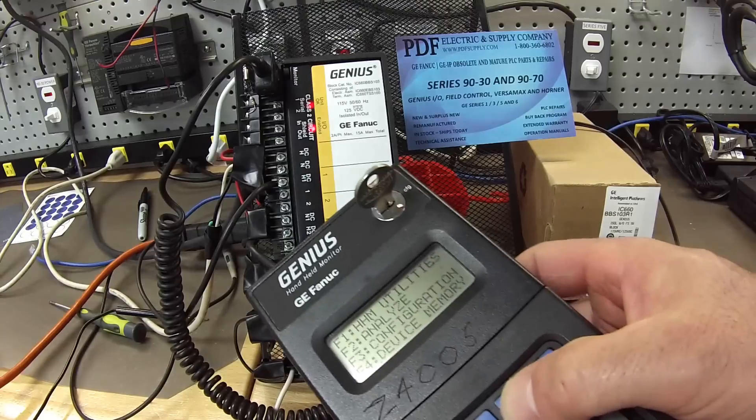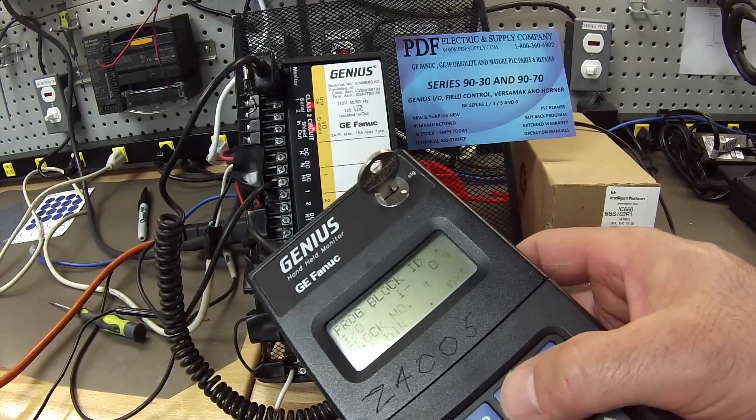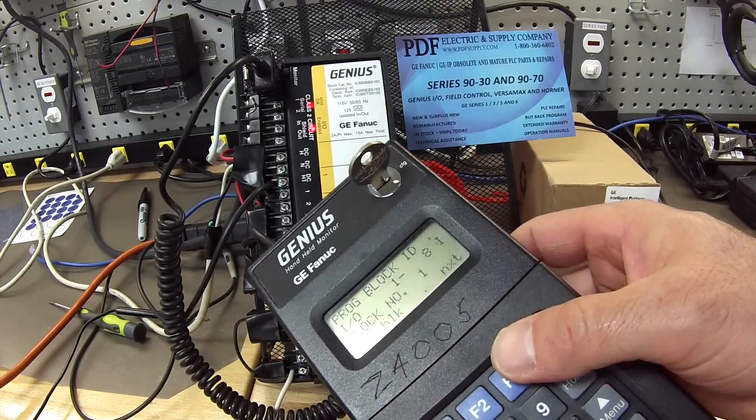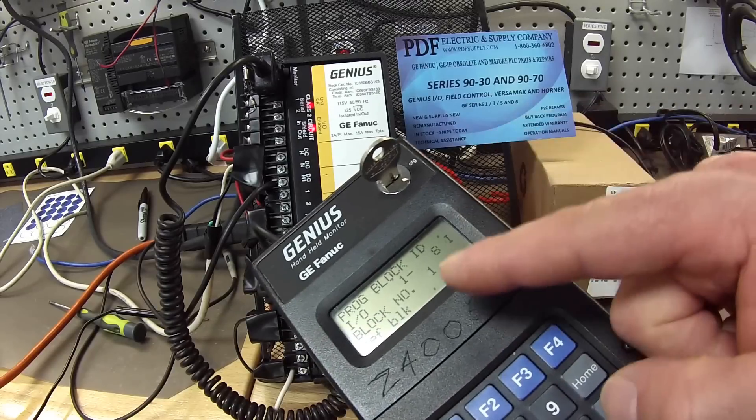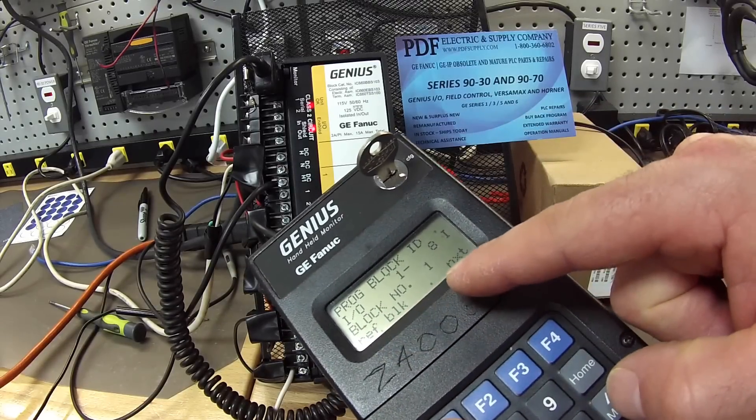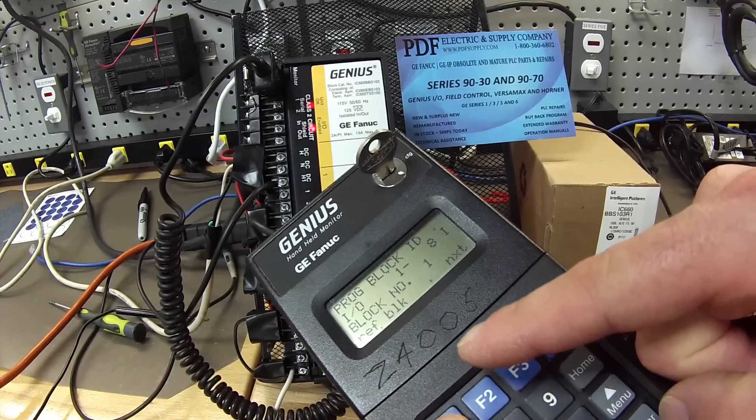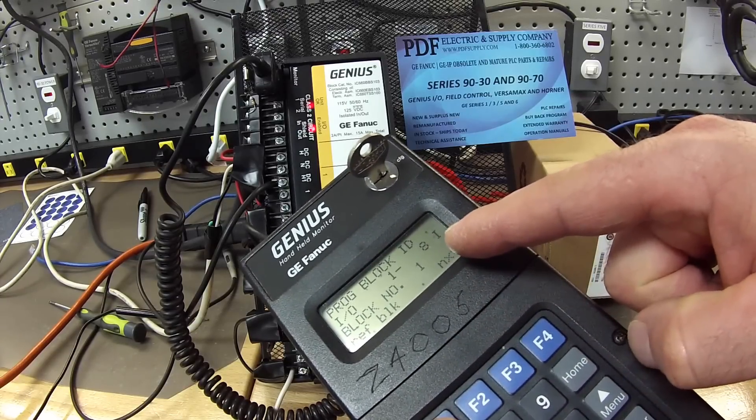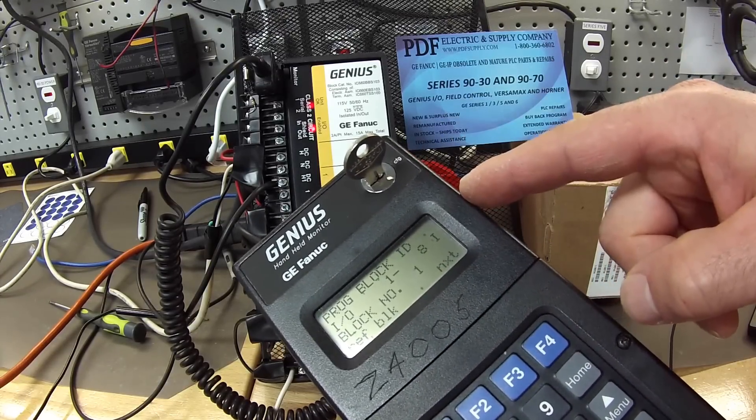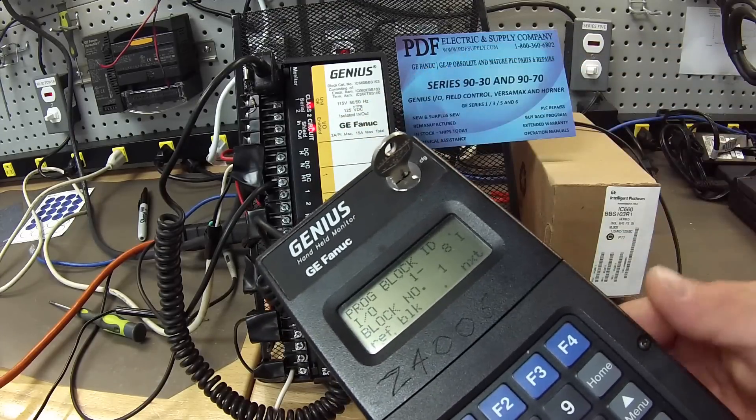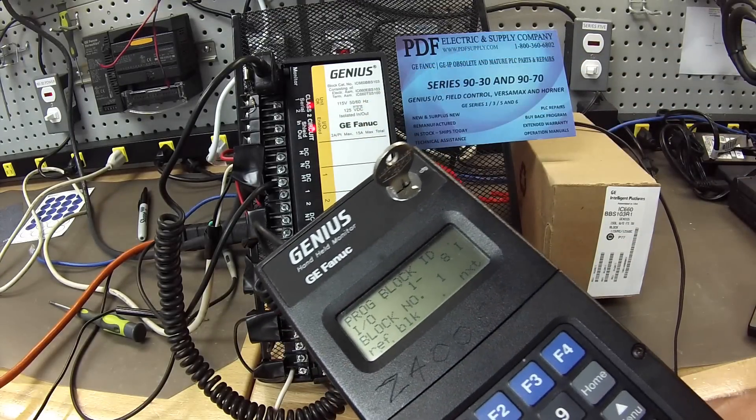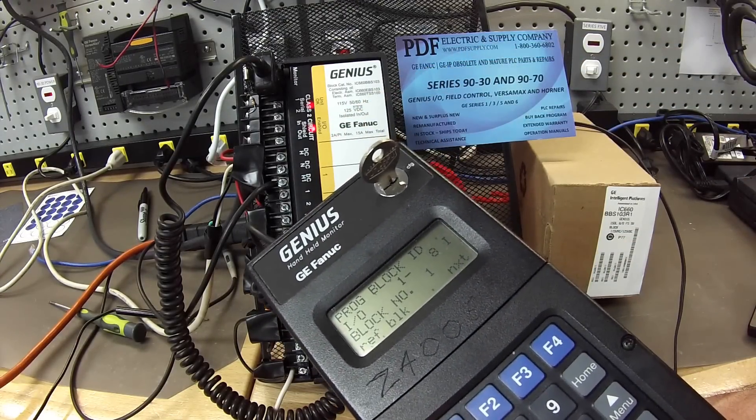F3 for configuration and F1 for block identification. The reason I'm showing you this is that you can see I've got this set up as block number one, which matches my Proficy Machine Edition and eight inputs for the first part of the test. That's the reason I have that light on. Make sure that you have things matching to get that light on.